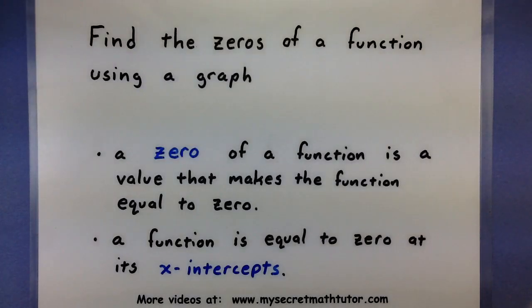Now what makes this process really easy is that a function is equal to zero at its x-intercepts. So this is something that you may have been finding already, you just never realized that they're actually called zeros as well.